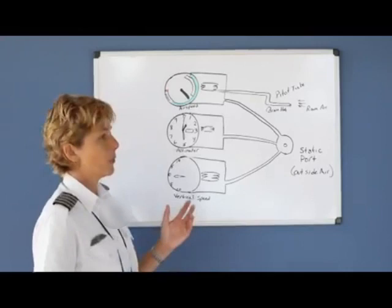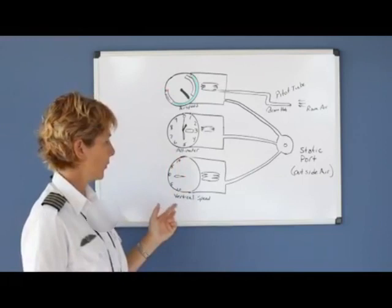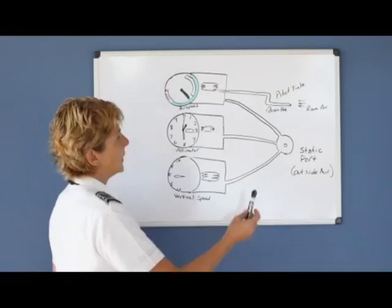First we're going to take a look at your pitot-static system. The instruments that work off your pitot-static system are your airspeed indicator, your altimeter, and your vertical speed indicator. Let's look and see how the airspeed indicator works first.